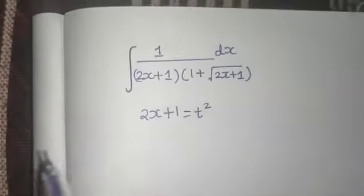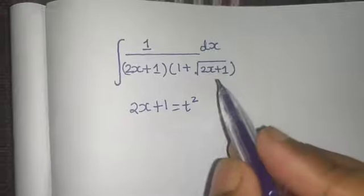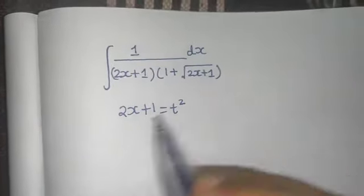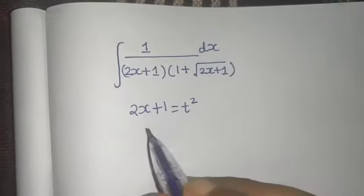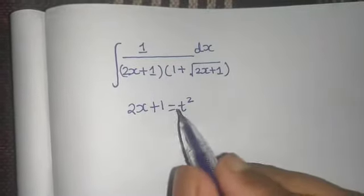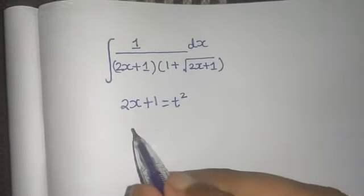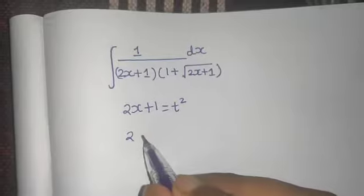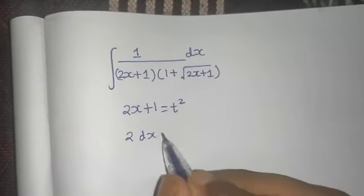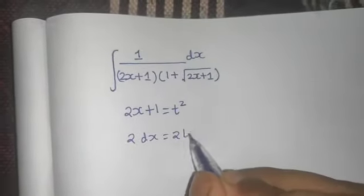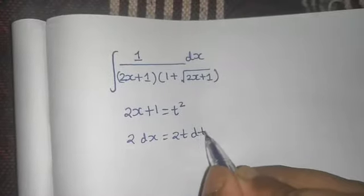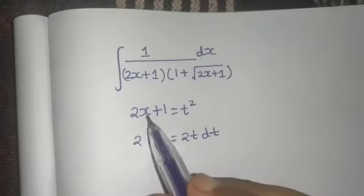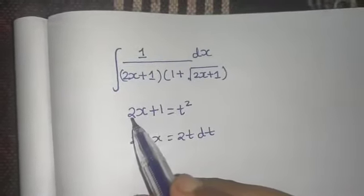This t squared under root will become t. So now 2x plus 1 equals t squared. Differentiating both sides, 2dx equals 2t dt, because the derivative of x is 1 times 2, and the derivative of 1 is 0. The 2 gets cancelled, so dx equals t dt.